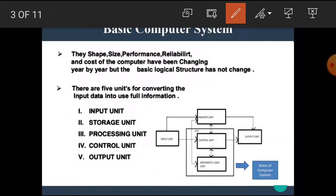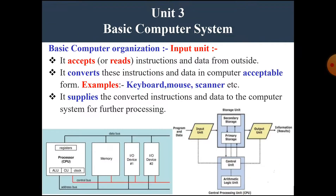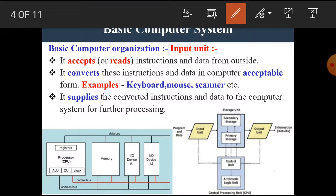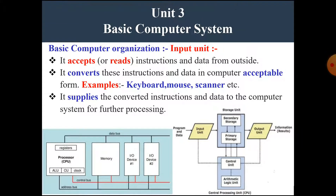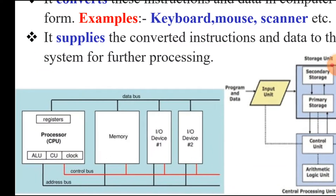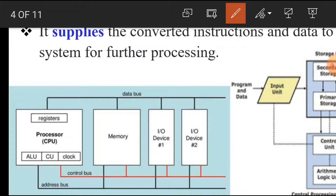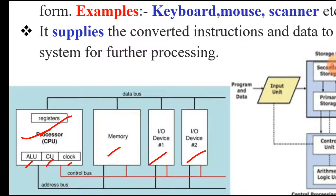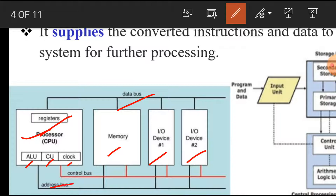Let's see details about the basic computer system. In this diagram, the blocks in both diagrams are the same. That means in this block diagram we can see the processor — that means CPU, central processing unit — which contains registers, ALU (arithmetic and logic unit), control unit, and clock, memory, input-output device, and a second input-output device. There are also the data bus, address bus, and control bus.